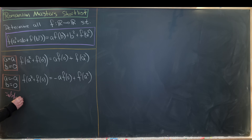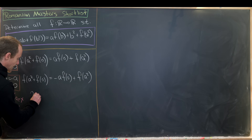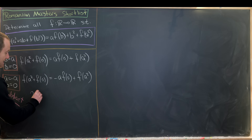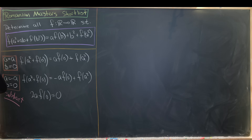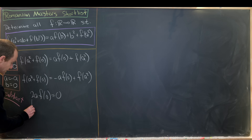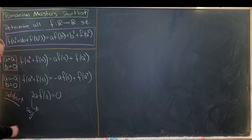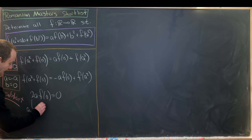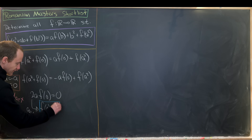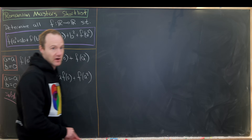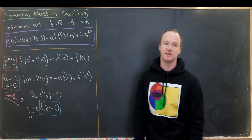Subtracting the two equations gives a nice simplification: we get 2·a·f(0) = 0, which is valid for any value of a. In particular, plugging in a = 1/2 gives us f(0) = 0. That's our first value of the function.